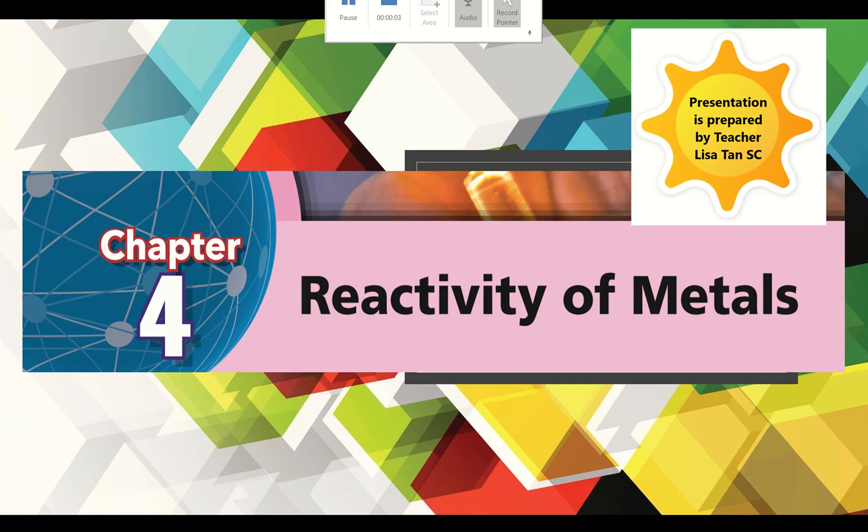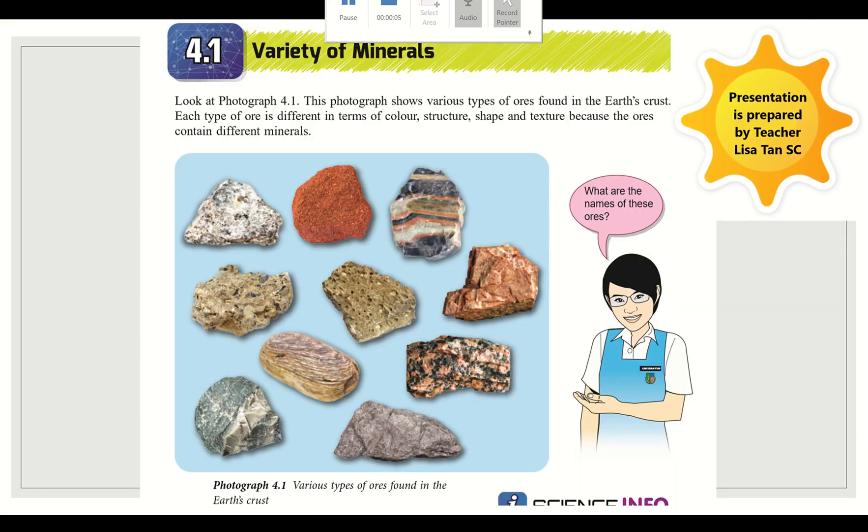Chapter 4 Reactivity of Metals, 4.1 Variety of Minerals. Look at photograph 4.1. This photograph shows various types of ore that can be found in the earth crust. So what is ore? Ore is natural rock which contains minerals.